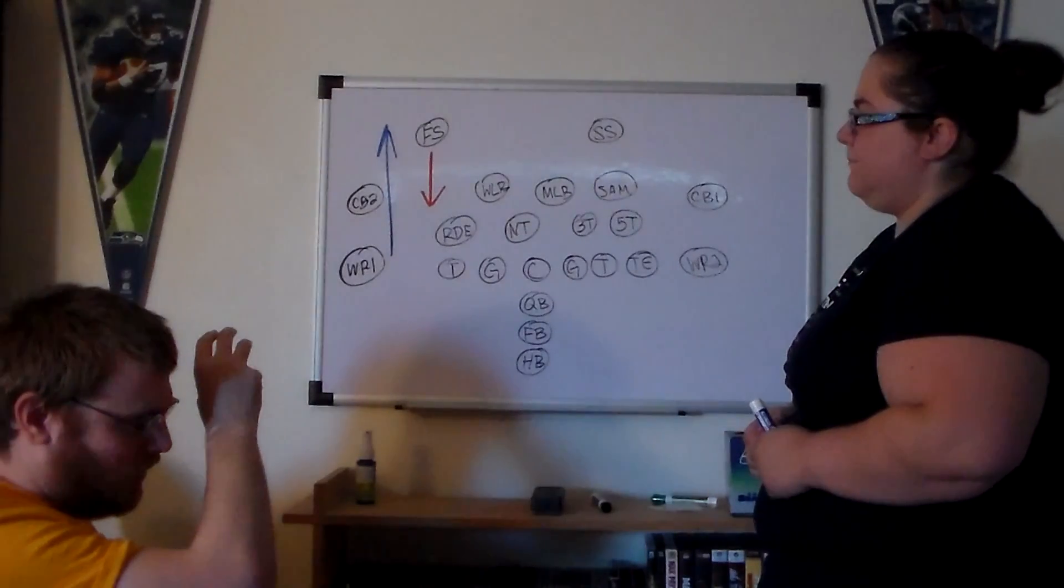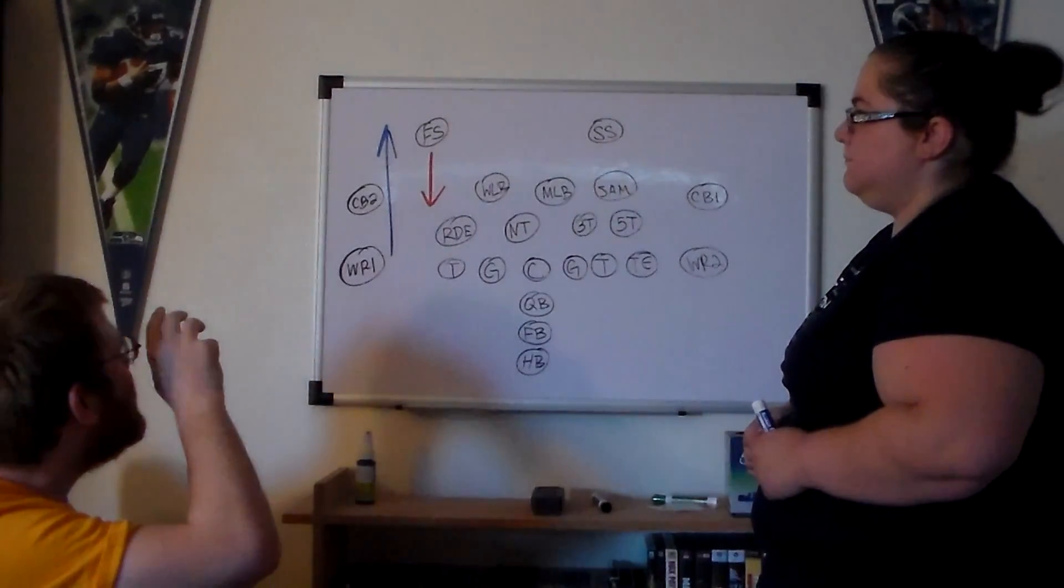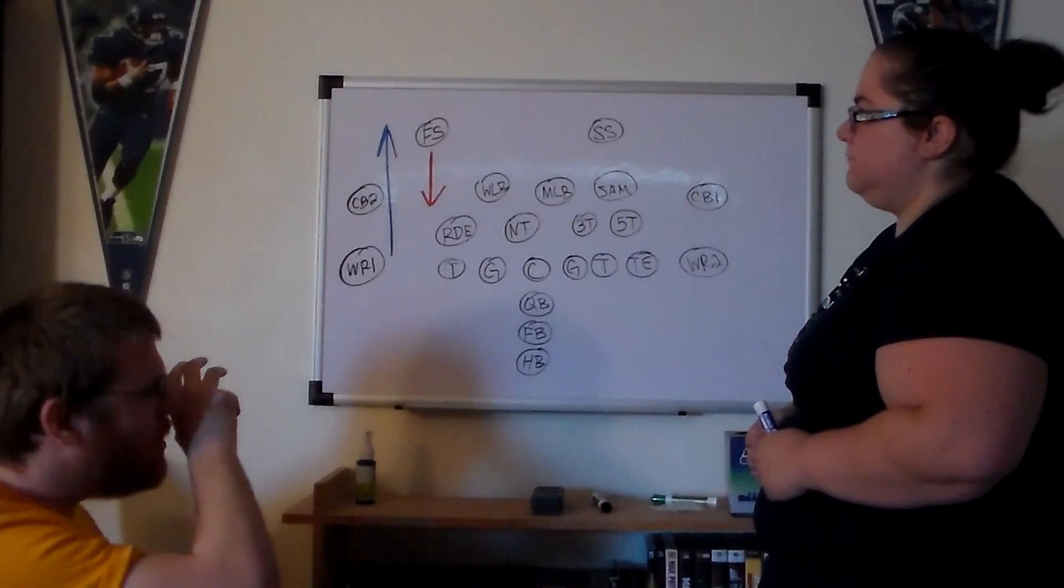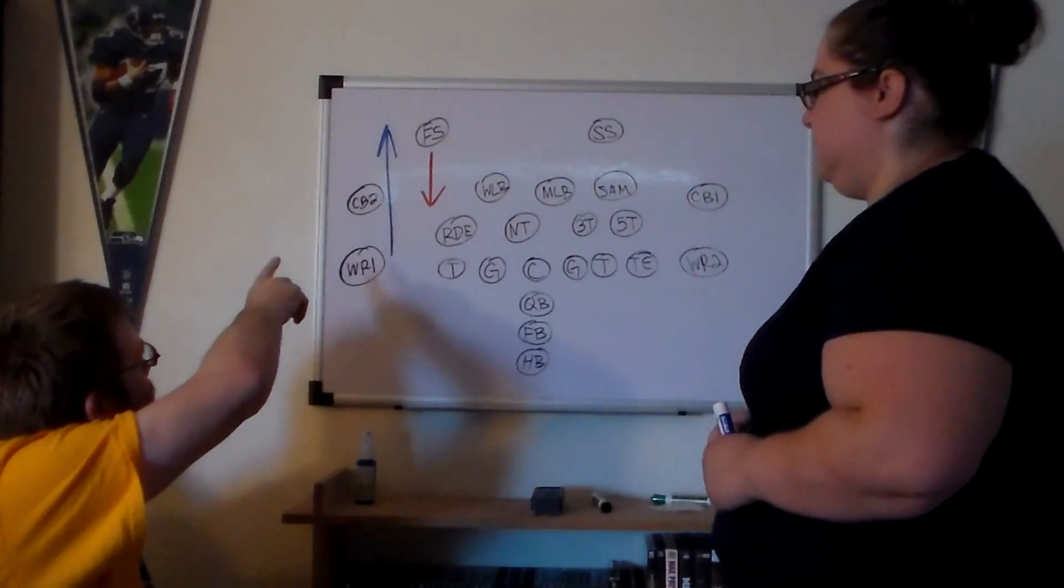The other thing the quarterback has to identify before throwing this is does the corner back up at the snap? In this scenario, let's call this cushion five yards. We'll do that in green.